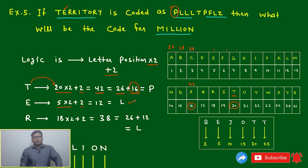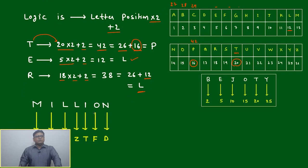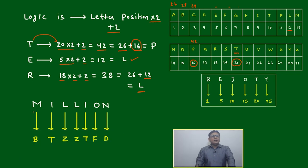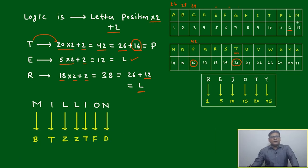5 into 2 plus 2, it will become 12, that is L. Or 18 into 2 plus 2, it will become 38, which is 26 plus 12. We have to just check the position of 12, which is L. For any alphabet, we check the numerical position, multiply by 2, and add 2. Similarly, we'll check MILLION. What is the position of M? M is 13. 13 into 2 is 26, plus 2 is 28.